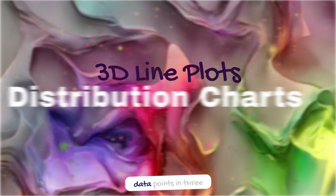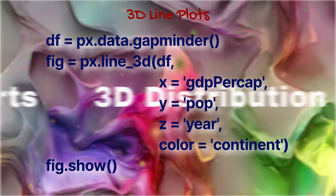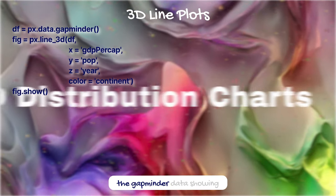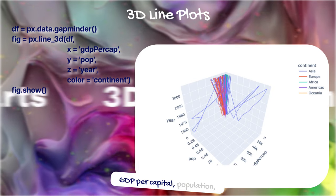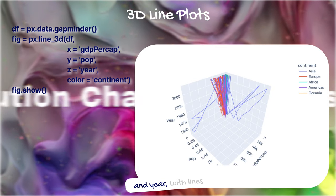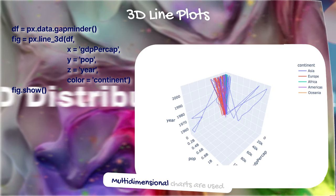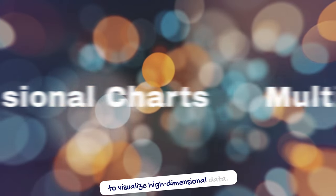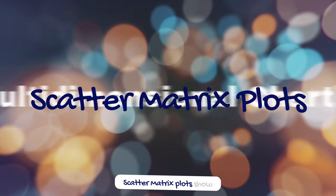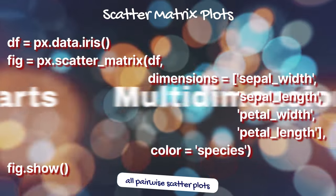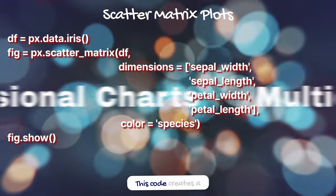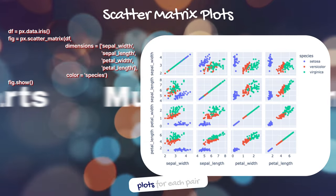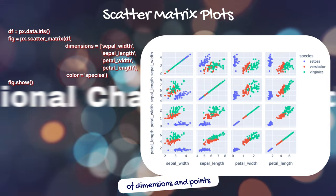3D line plots connect data points in three dimensions. This code creates a 3D line plot of the Gapminder data, showing GDP per capita, population, and year, with lines colored by continent. Scatter matrix plots show all pairwise scatter plots of variables in a dataset. This code creates a scatter matrix of the iris dataset, with plots for each pair of dimensions and points colored by species.